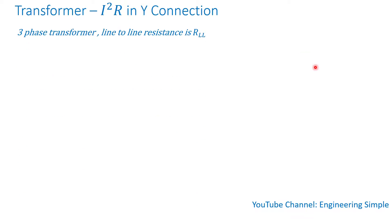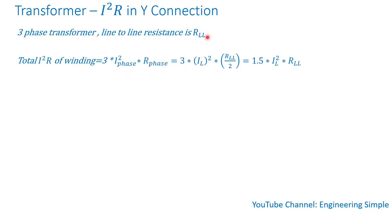Let's assume we have a three-phase transformer where the line-to-line resistance is R_LL. The total I squared R of this Y winding — we have three phases — is three times the phase current squared times the phase resistance. The phase current is the same as the line current, so it's three times the line current squared times the phase resistance.